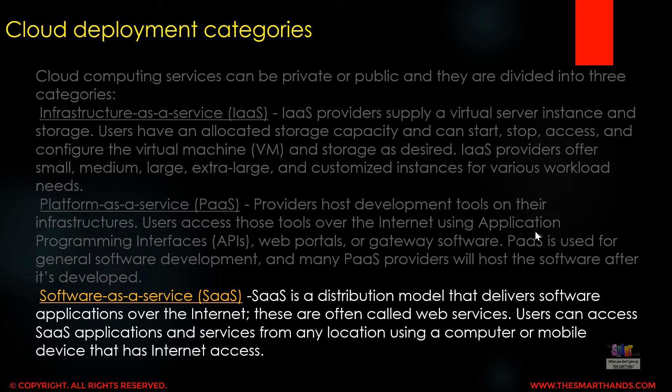The last category is SaaS — Software as a Service. SaaS is a distribution model that delivers software applications over the internet; these are often called web services. Users can access SaaS applications and services from any location using a computer or mobile device that has internet access. These are the three categories within the cloud deployment options.